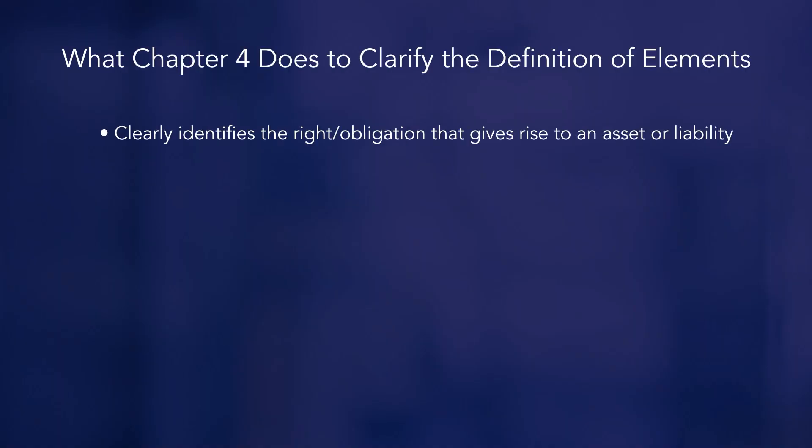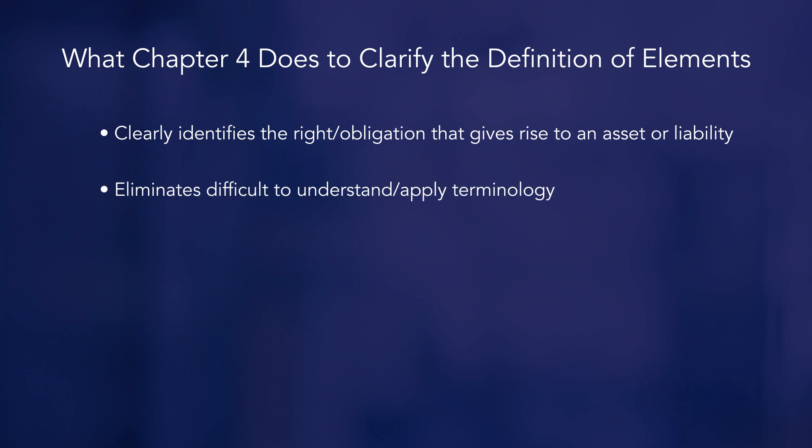Chapter four does several things to clarify the definition of elements in concept statement six. First, it clearly identifies the right or the obligation that gives rise to an asset or liability. Second, it eliminates terminology that makes the definitions of assets and liabilities difficult to understand and apply.